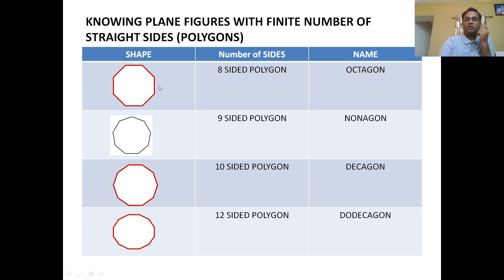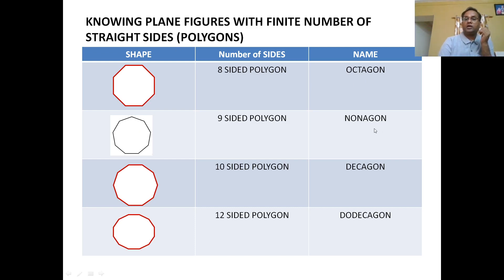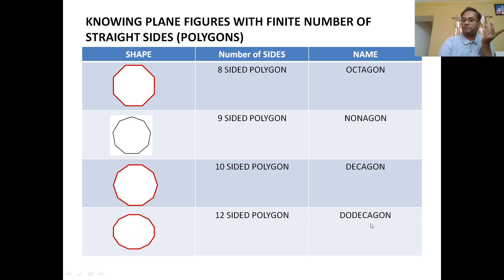A nine-sided polygon is called a nonagon. A ten-sided polygon is called a decagon. And a twelve-sided polygon is called a dodecagon.